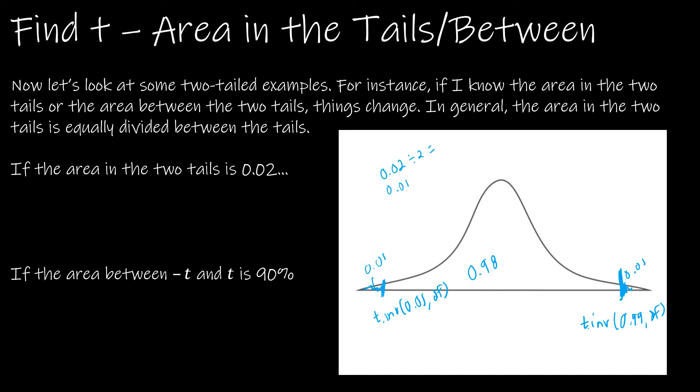Same concept if now I'm looking at the area between negative t and positive t is 90%. If it's 90% in the center, then one minus 0.9 gives me 0.1. So there's 0.1 total in the tails, and I still have to divide it by 2 to get 5%. So this is 0.05 and this is 0.05.